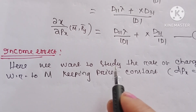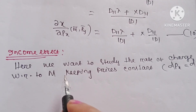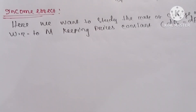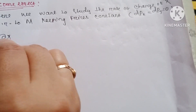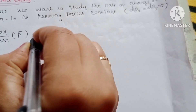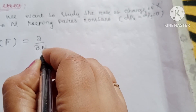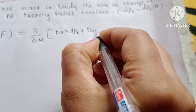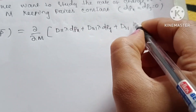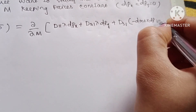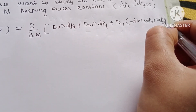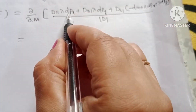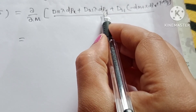Now we will discuss the income effect. Here we want to study the rate of change of x with respect to m, keeping prices constant. That means dpx and dpy are zero. So we want to calculate del x / del m keeping prices constant. This equals del/del m of dx, which is d11·λ·dpx plus d21·λ·dpy plus d31 multiplied by minus dm plus x·dpx plus y·dpy, all divided by the determinant value.